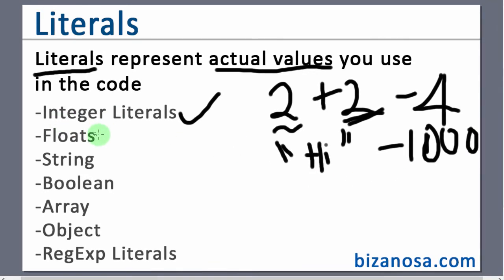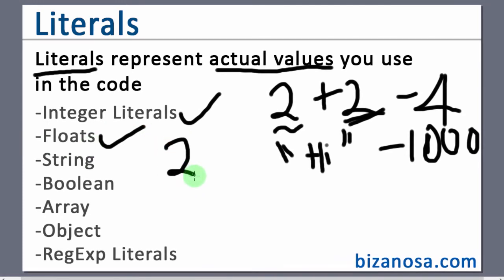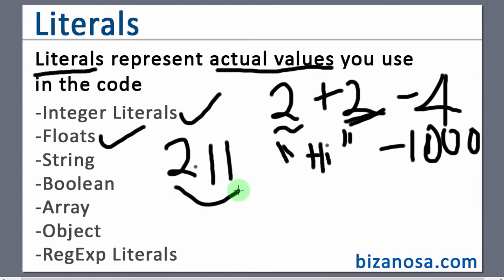Integer numbers. Then we also have floating points. Now floating points, these are numbers that have decimals. So 2.11. That's a floating point number.